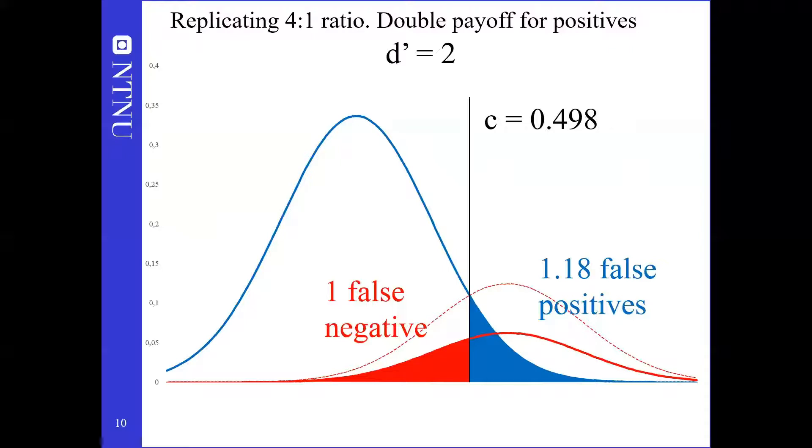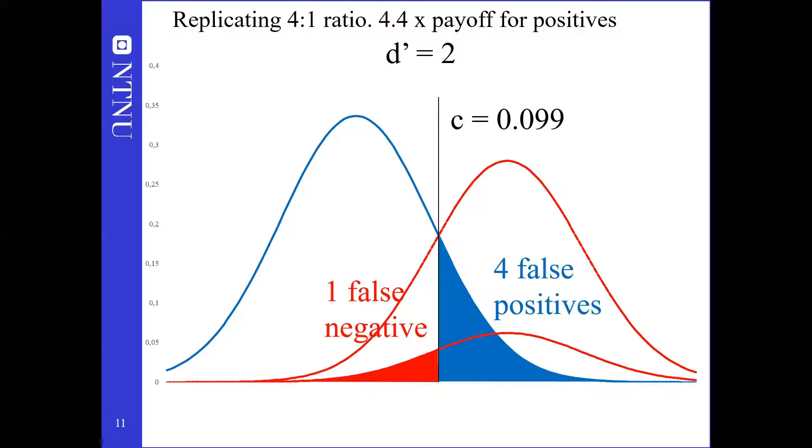We make the payoff asymmetric, letting the false negatives be twice as important as shown in the stippled line. That shifts the optimal decision criterion, but to find the total false positives and false negatives, we still need to stick to the original base rate. We now get 1.18 false positives for every false negative. Closer, but not yet there. When the false negatives are 4.4 times as important as the false positives, we get 4 times as many false positives as false negatives, matching the empirical results. The decision criterion at 0.099 is still slightly conservative though.